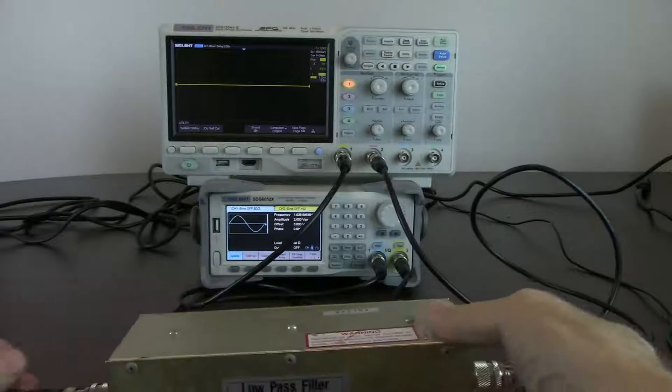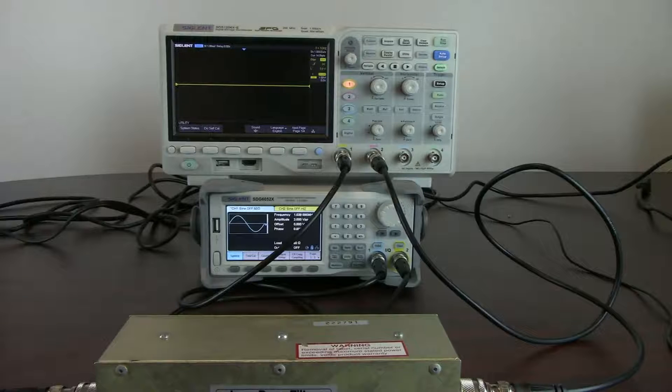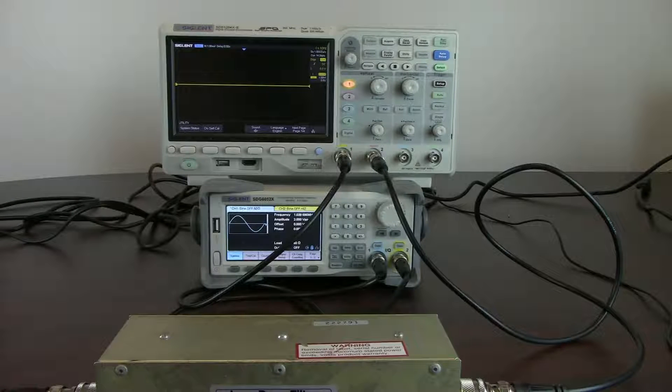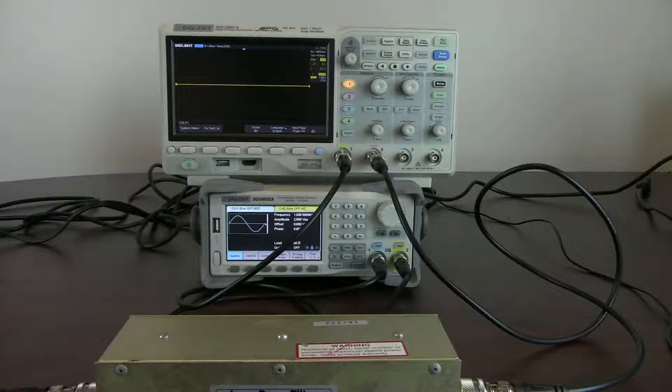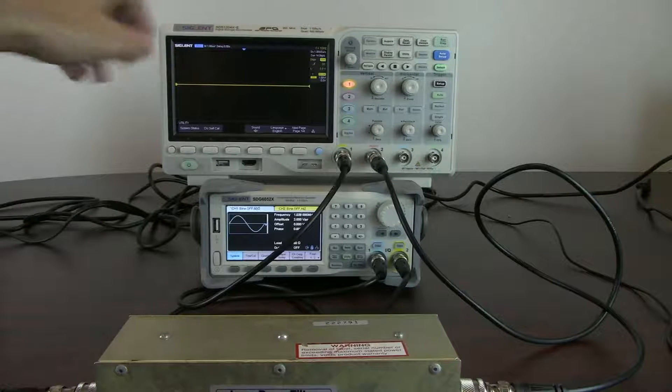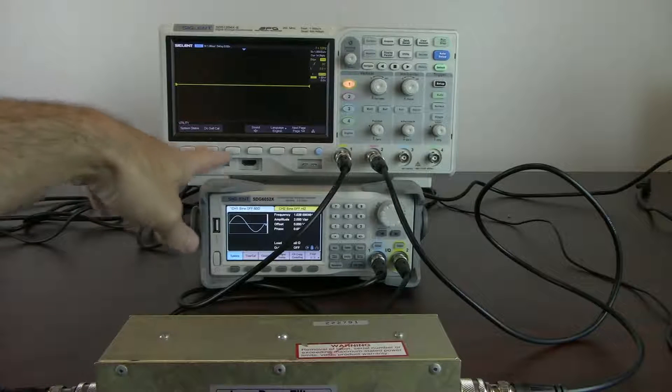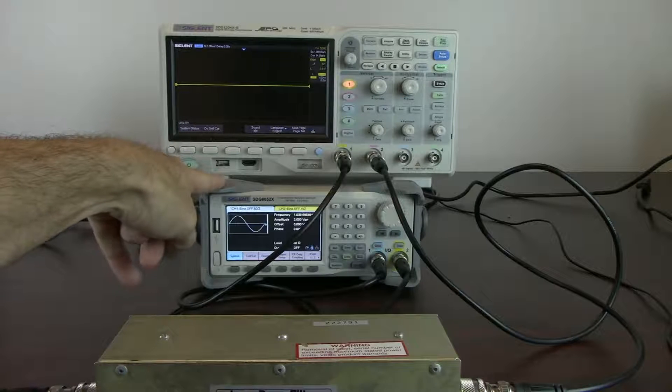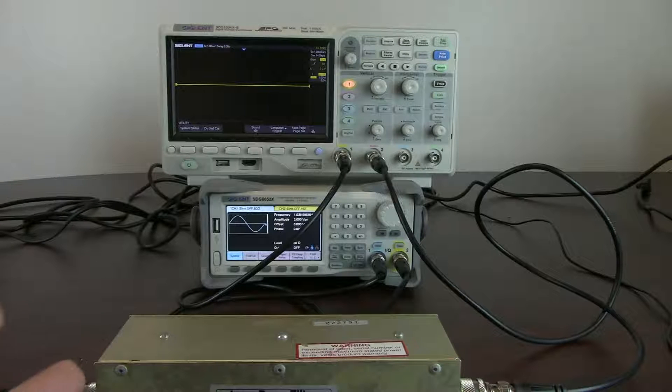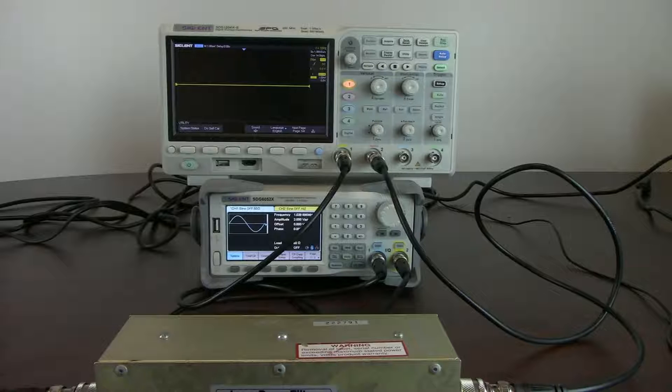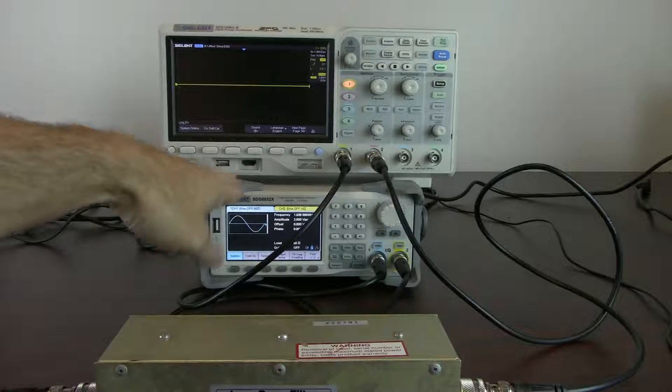So what we're going to do to perform this test, we've got our XE oscilloscope. Again, this method that we're talking about is only going to be applicable to four-channel XE series. Those are two models right now: the 100 megahertz SDS-1104XE and the 200 megahertz SDS-1204XE, which is the model that we're using for this particular test today. We're also going to be using a generator. In this case, we're using one of our SDG-6000X series. This particular technique that we're talking about works with an SDG-1X, 2X, or 6X family of products. That gets you from 30 megahertz with the SDG-1032X all the way up to 500 megahertz with the SDG-6052X, which is what we have here.